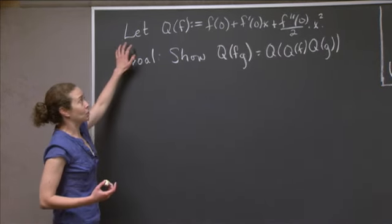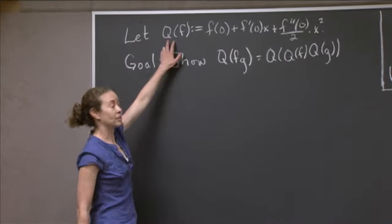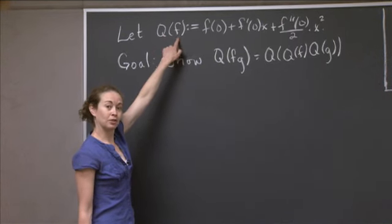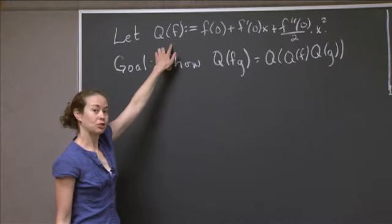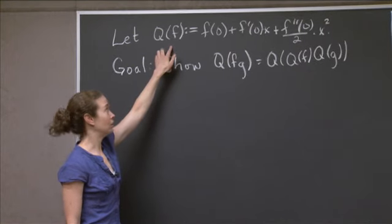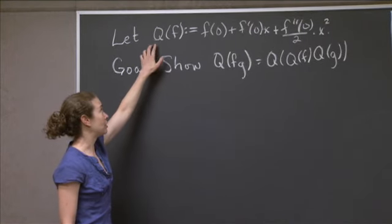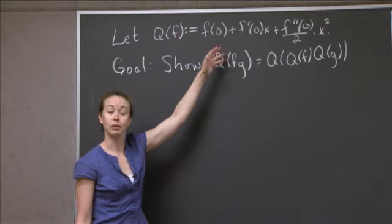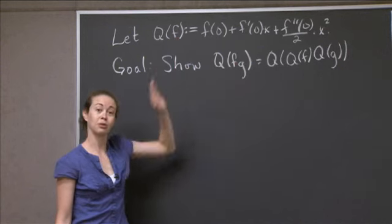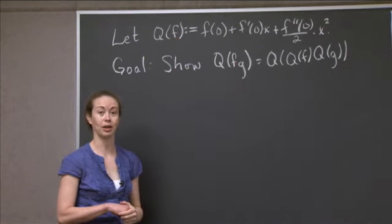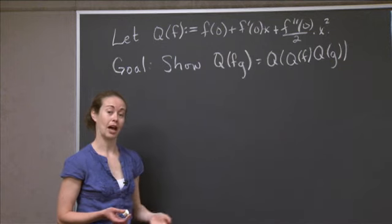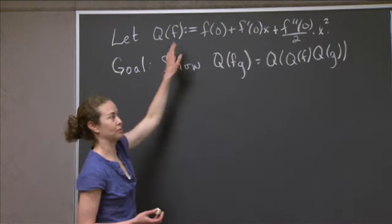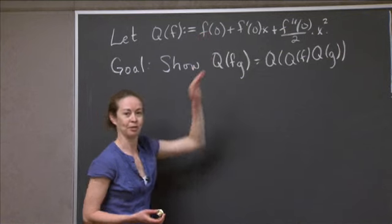The situation is as follows. Any time you see Q(f), that's going to represent the quadratic approximation to f at x equals 0. So what I've done is define Q(f) to be the formula you were given in class for the quadratic approximation of a function f at x equals 0. So f is approximately the thing on the right near 0.